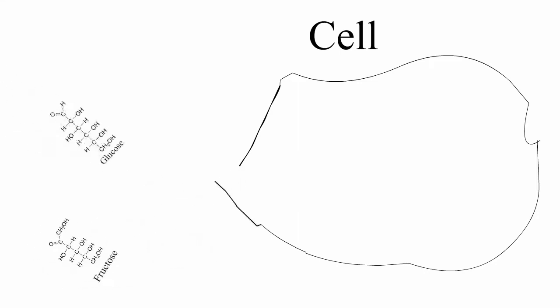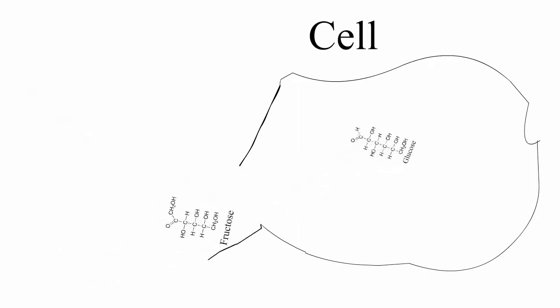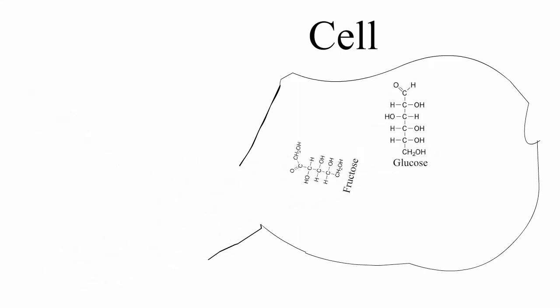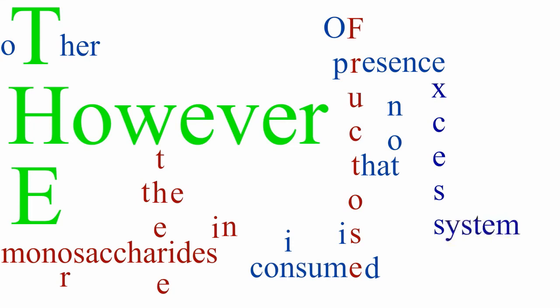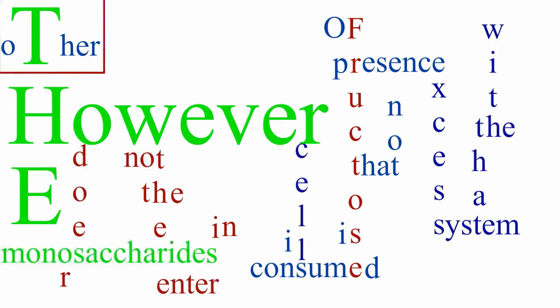In the presence of other monosaccharides, such as glucose, fructose piggybacks its way into cells with these monosaccharides through the GLUT4 receptors. However, fructose that is not consumed in the presence of other monosaccharides, or excess fructose in the system that does not enter cells with other monosaccharides,